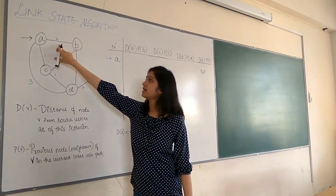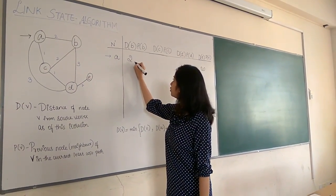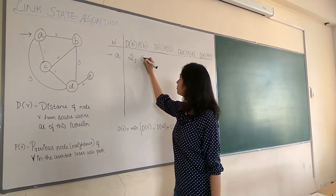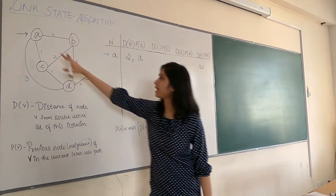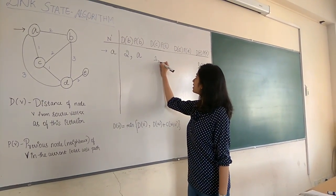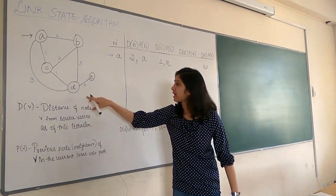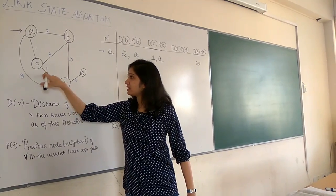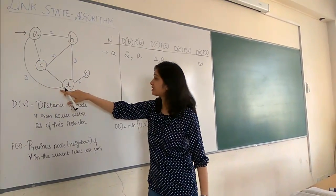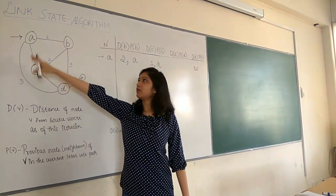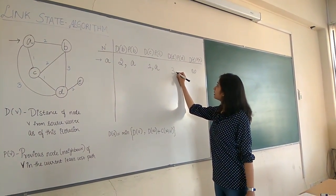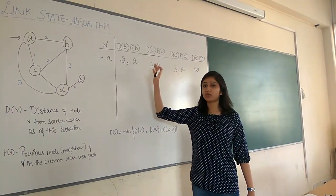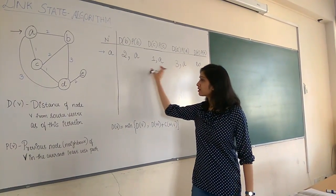The distance from A to B is 2, so you write down 2, and the previous node — from A to B we are considering this direct link — so the previous node is A itself. Similarly, the distance of C from A is 1 and the previous node is A. The distance of D from A is 3. You just consider the direct link. We know there are other links but those will be calculated later. In the first step you just check what vertices are directly connected from the source vertex. So you write 3 and the previous node is A. In the next iteration you consider the vertex with the least cost path from the source vertex.